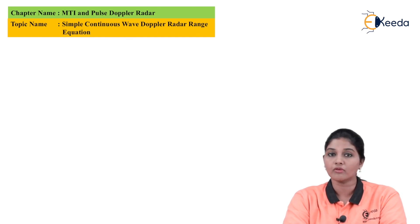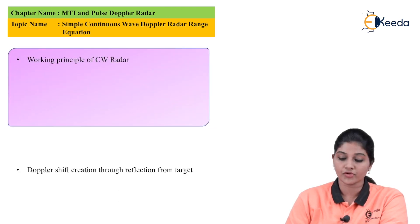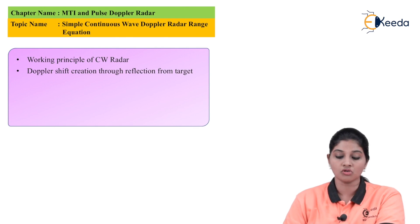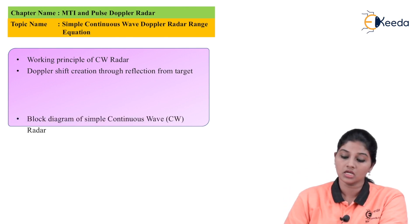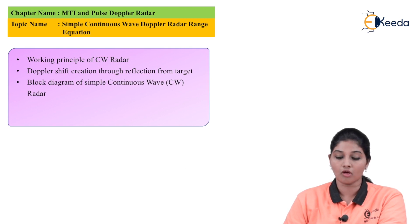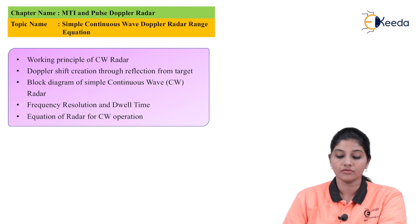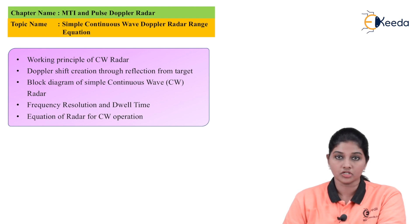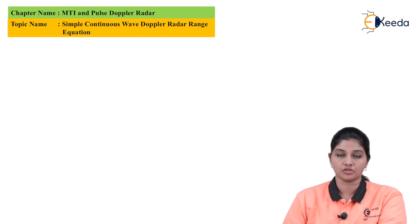In this topic we are going to discuss the following points: the working principle of continuous wave radar, Doppler shift creation through reflection from a target, the block diagram of a simple continuous wave radar, frequency resolution and dwell time, deriving the radar range equation for continuous wave operation, and finally MCQs.